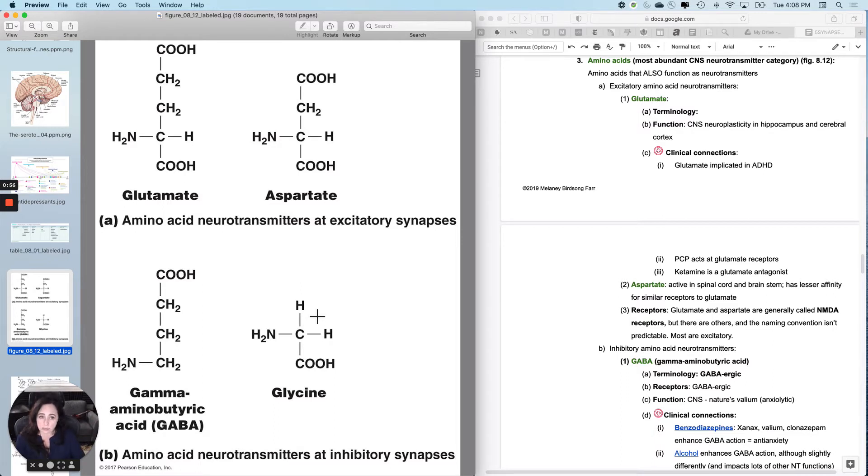Now the excitatory amino acid neurotransmitters glutamate and aspartate are similar to one another. Terminology is not very consistent with these, so they usually just call them glutamate synapse or an aspartate synapse.